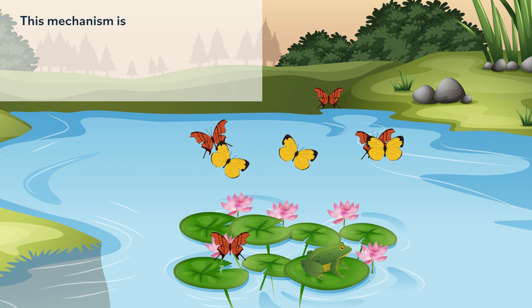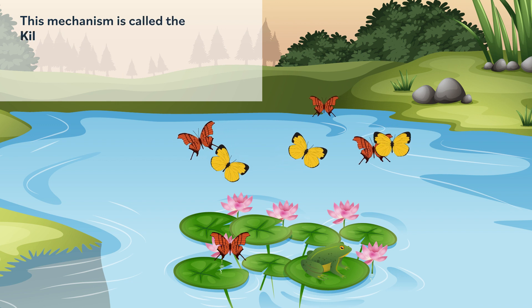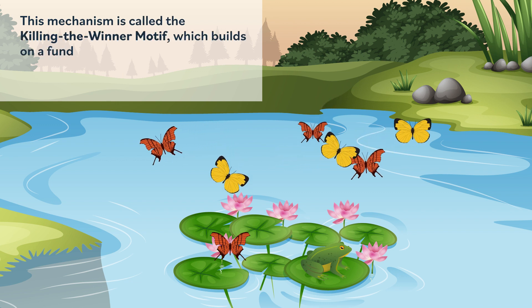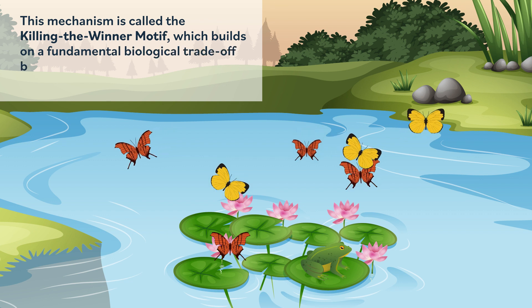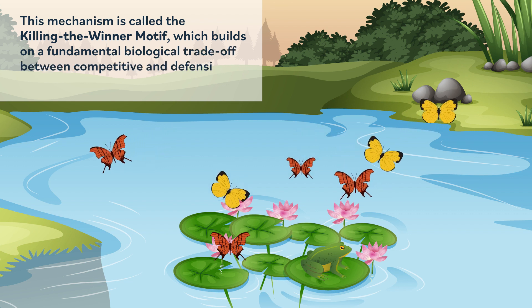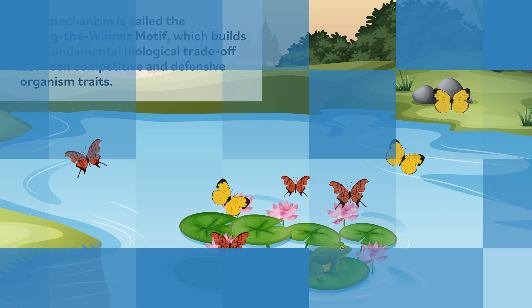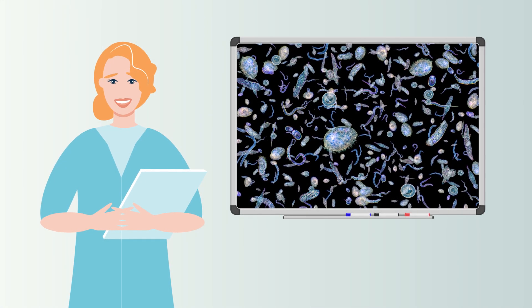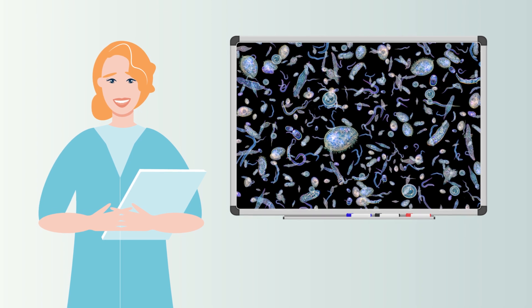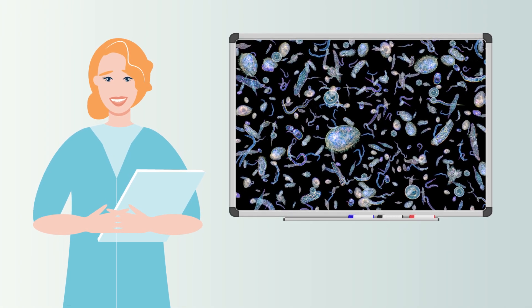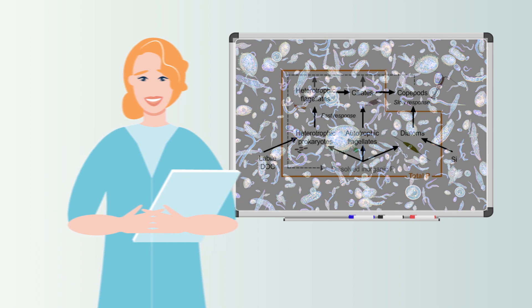This mechanism is called the killing the winner motif, which builds on a fundamental biological trade-off between competitive and defensive organism traits. Dr. Bogja and her team developed a conceptual model illustrating the killing the winner motif and applied it to microbial plankton communities in the ocean.